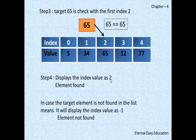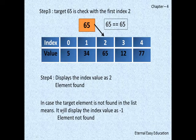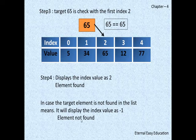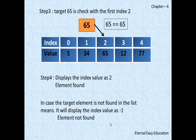It will display the index value as 2, and the element is found. In case the target element is not found in the list, it will display the index value as -1 and the element not found. I hope it will be very easy for you, and it is an easy search also.